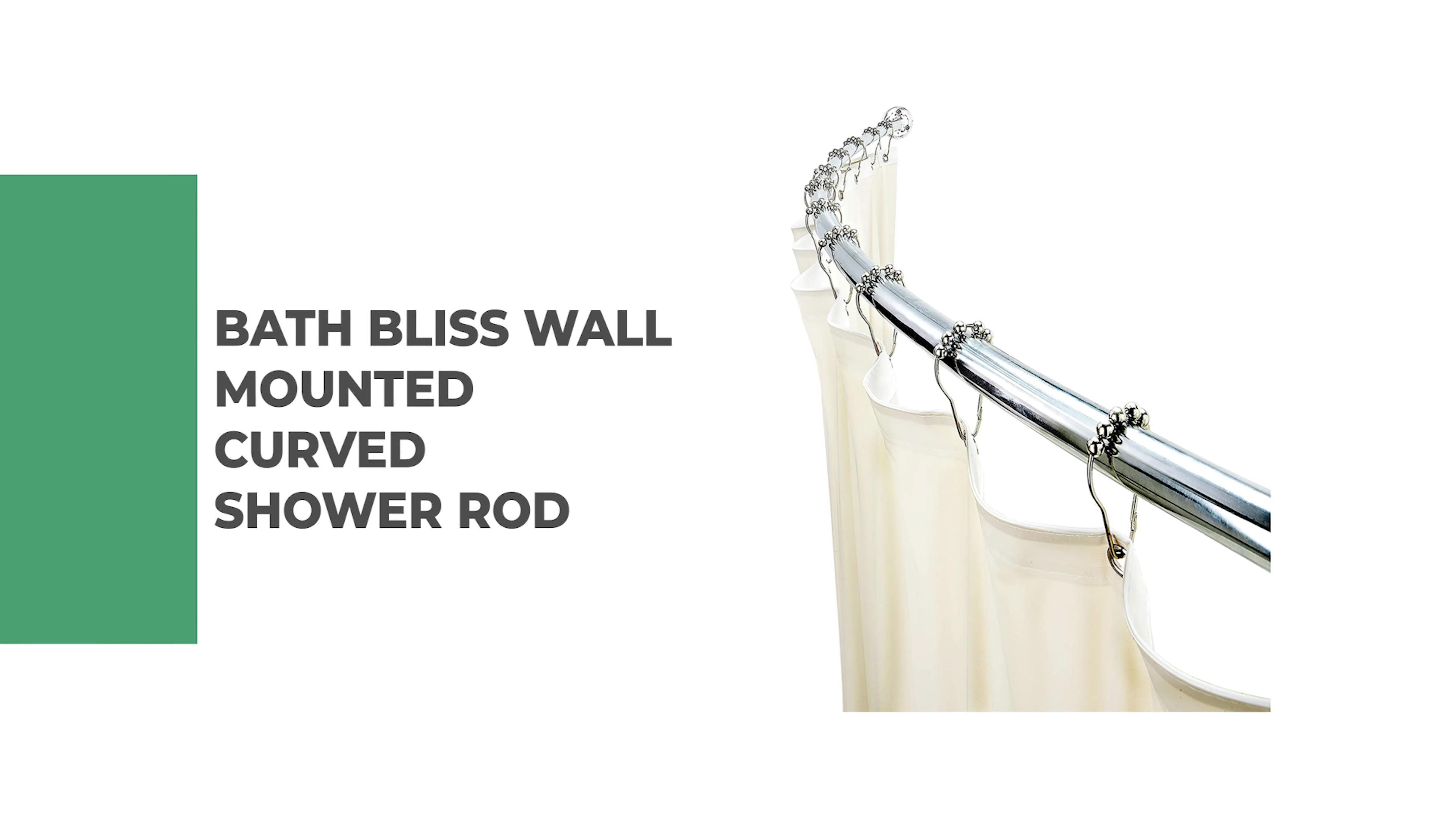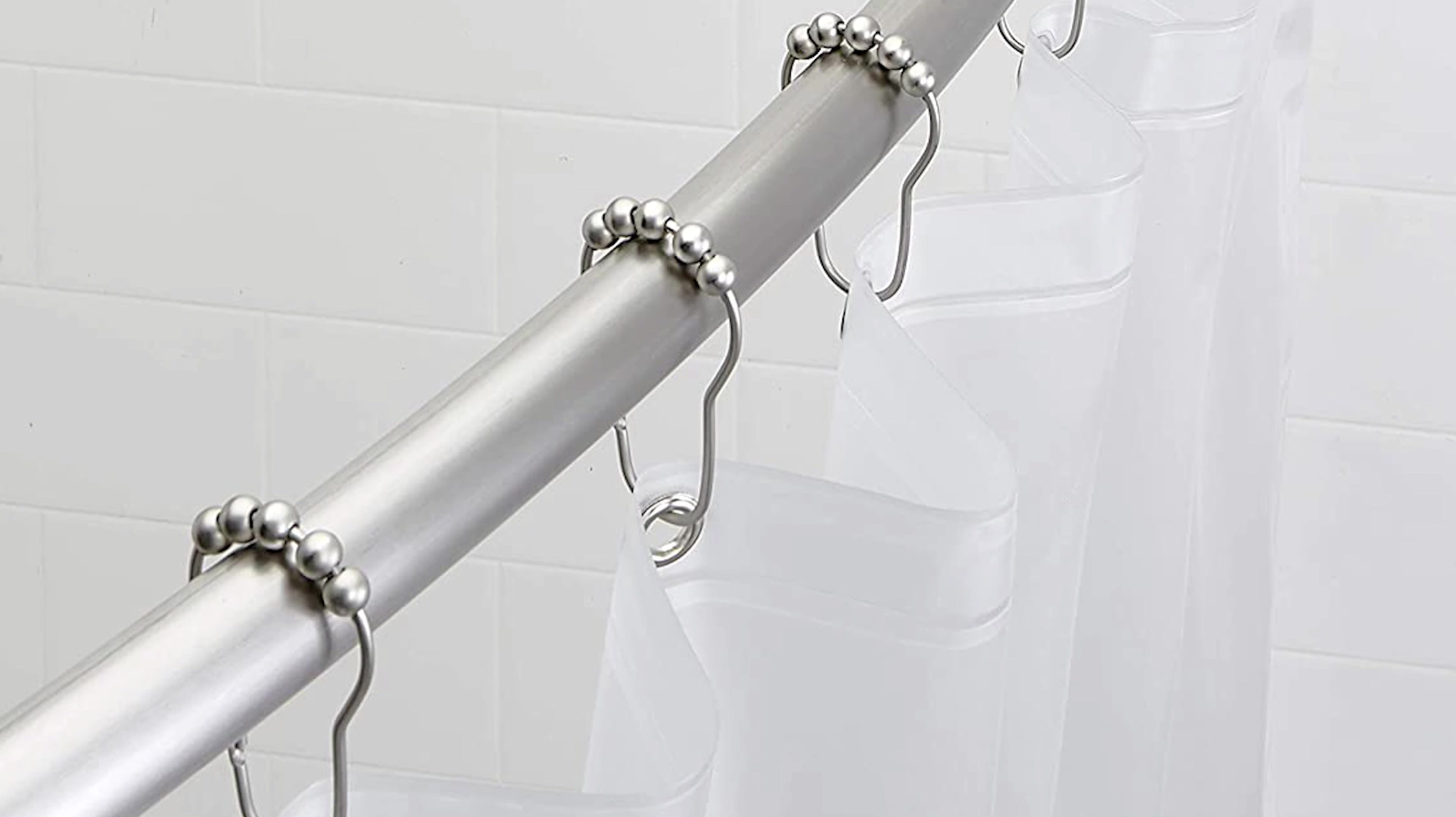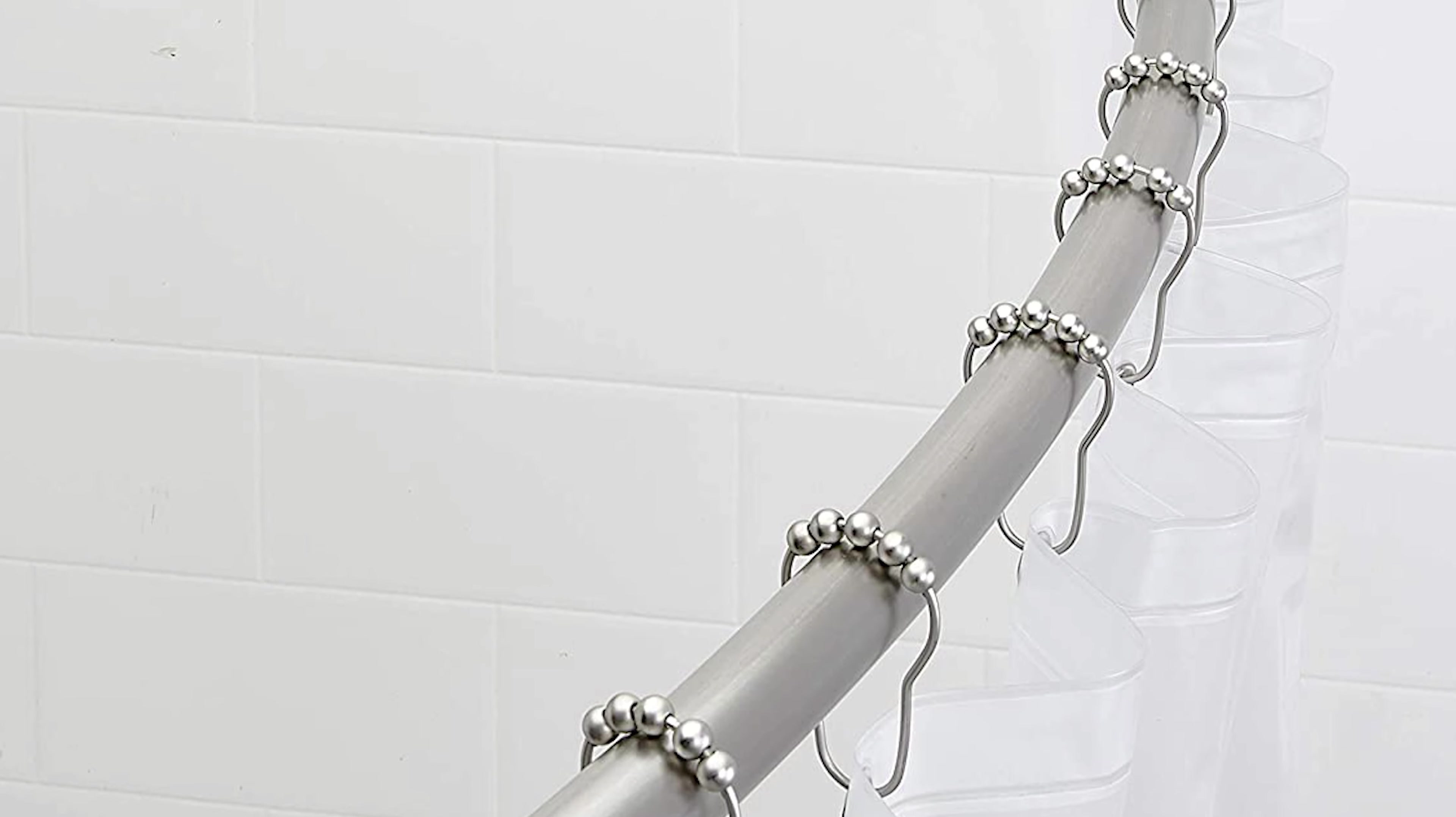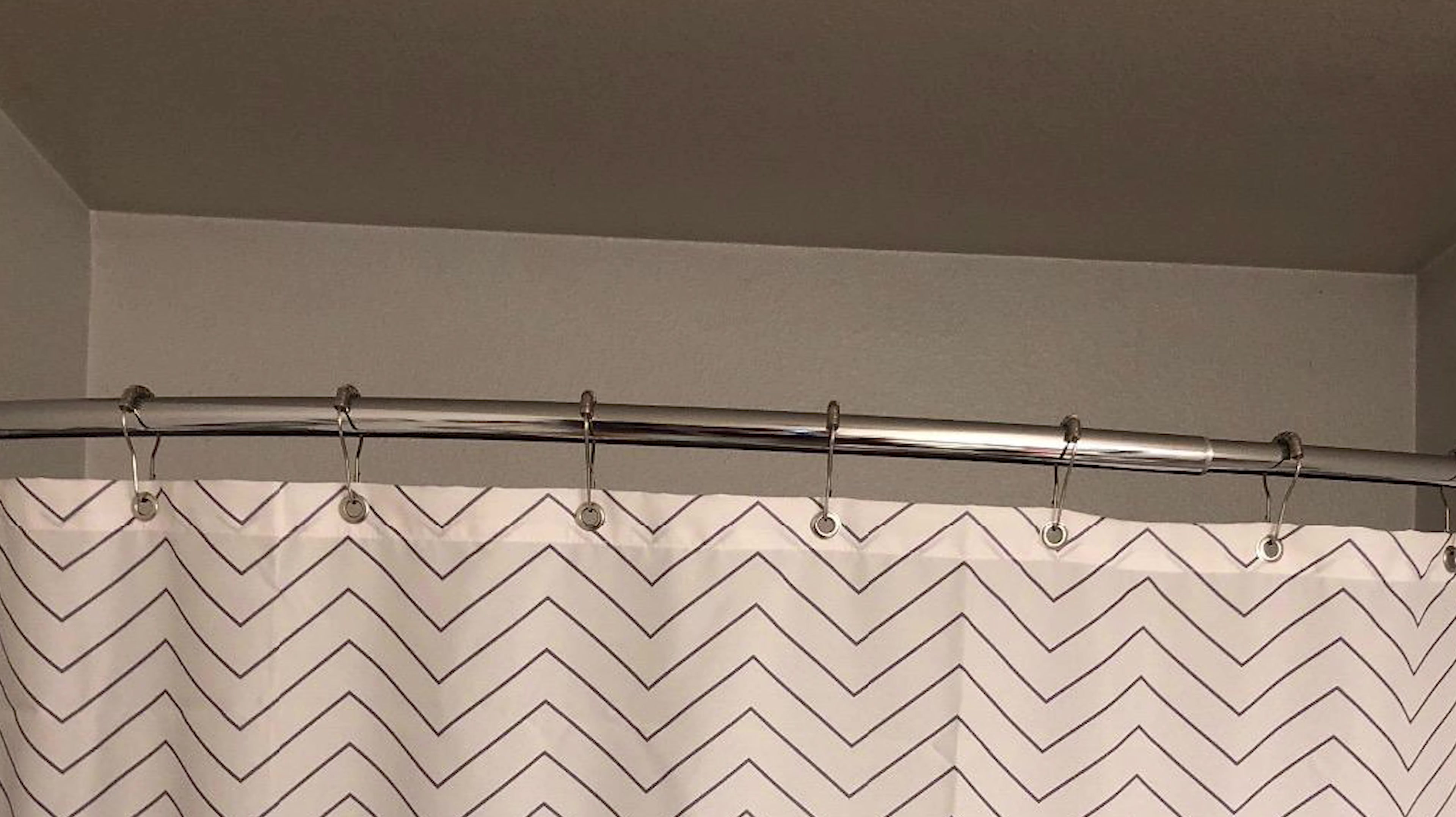Number 2. Bath Bliss Wall Mounted Curved Shower Rod. This wall-mounted curved shower rod is a convenient way to add space and style to your bathroom. This curved shower rod features a beautiful chrome finish that will complement any decor. It is made from rust-resistant iron and comes with all the hardware needed to install it. It's adjustable from 42 inches to 72 inches, so you can make it fit your bathroom perfectly.